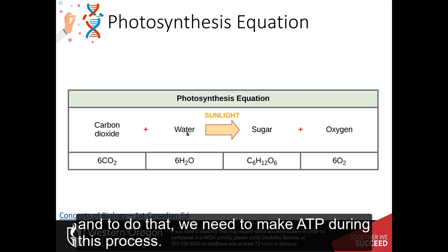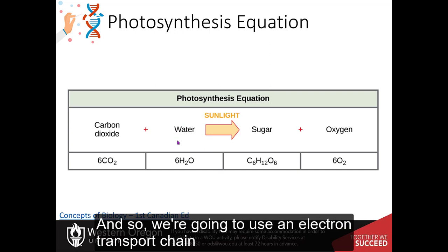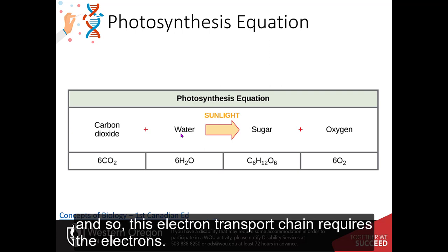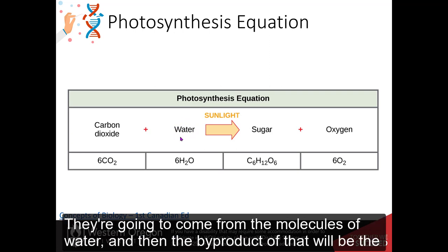And to do that, we need to make ATP during this process. And so we're going to use an electron transport chain very similar to what we saw inside the mitochondria. And so this electron transport chain requires the electrons. They're going to come from the molecules of water. And then the byproduct of that will be the oxygen.